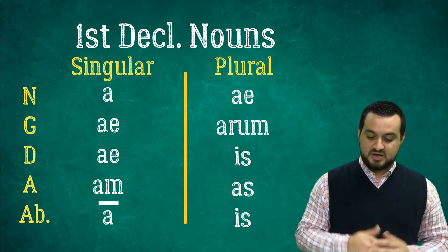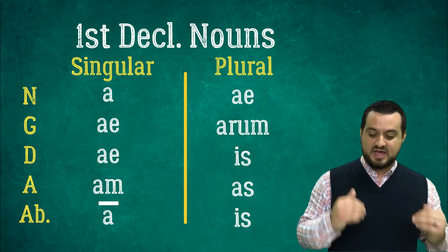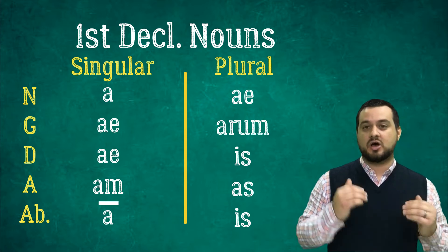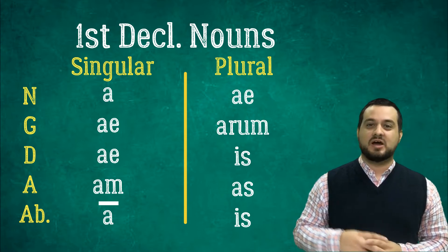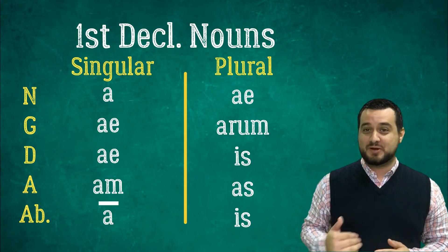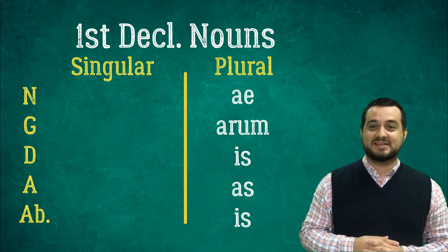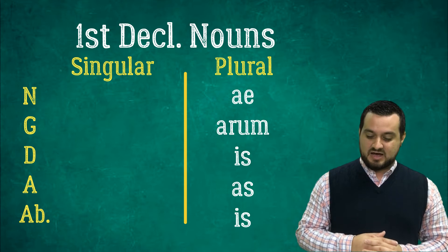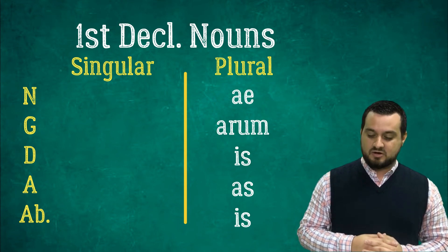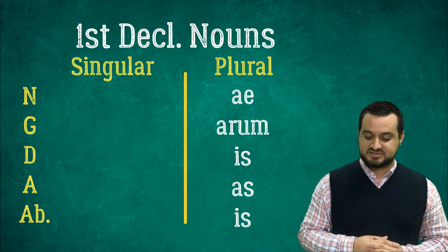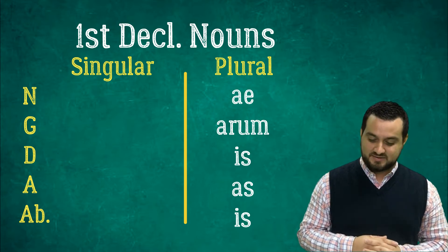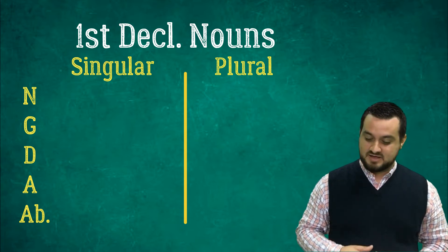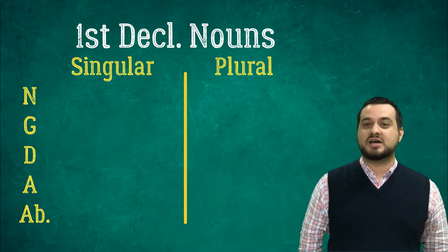Let's say them one more time: A, A, Am, A. A, Arum, Is, Os, Is. Very good. Now let's do it with the disappearing line game — we're going to make some of them go away and see if we still got it. A, A, Am, A. A, Arum, Is, Os, Is. Now we're going to take them all away: A, A, Am, A. A, Arum, Is, Os, Is. I hope you guys did well.